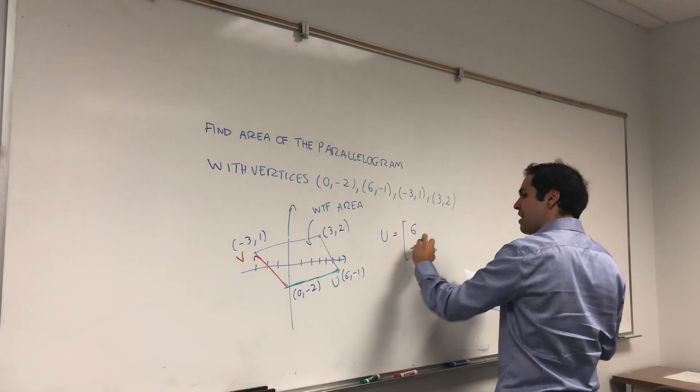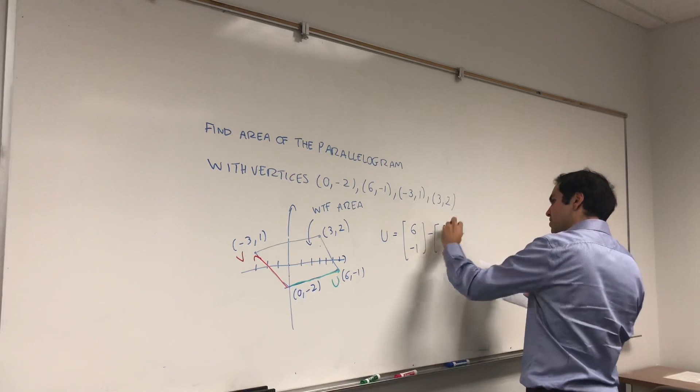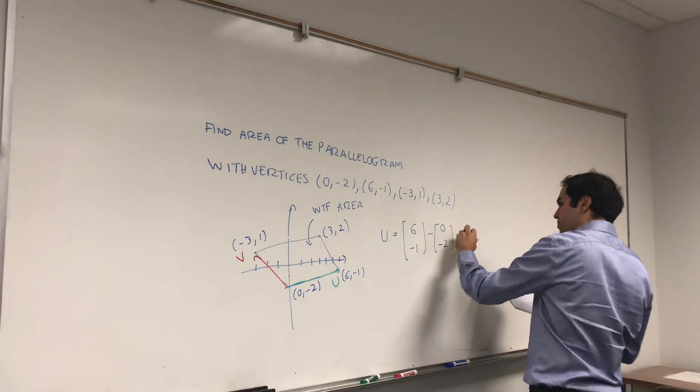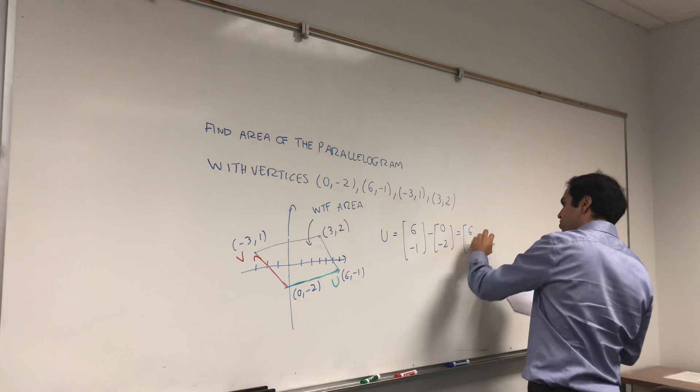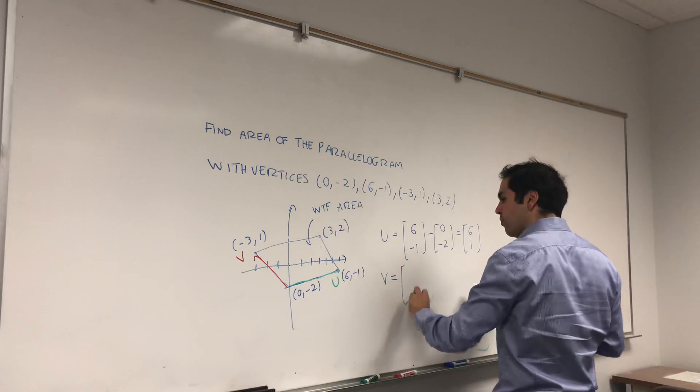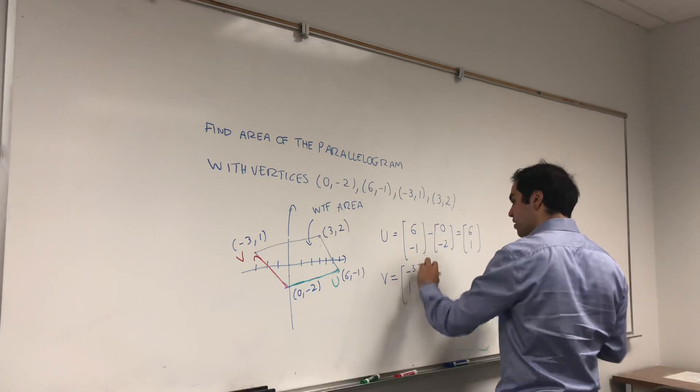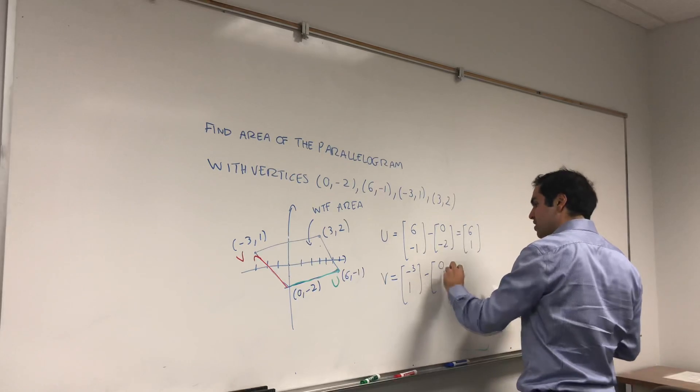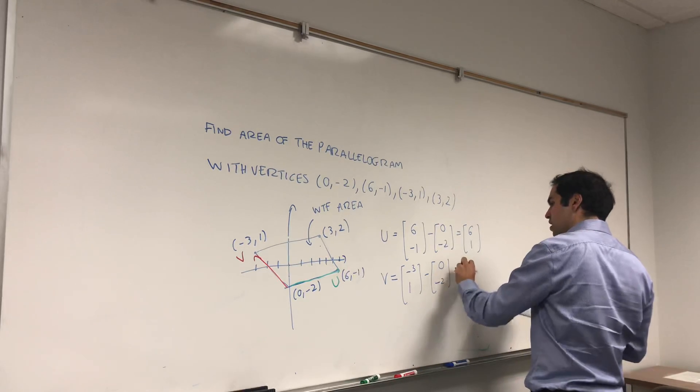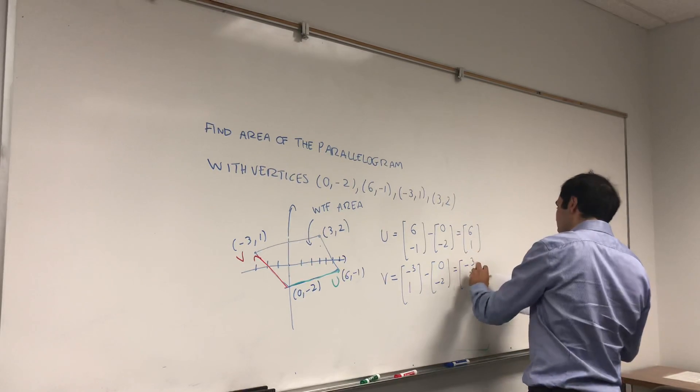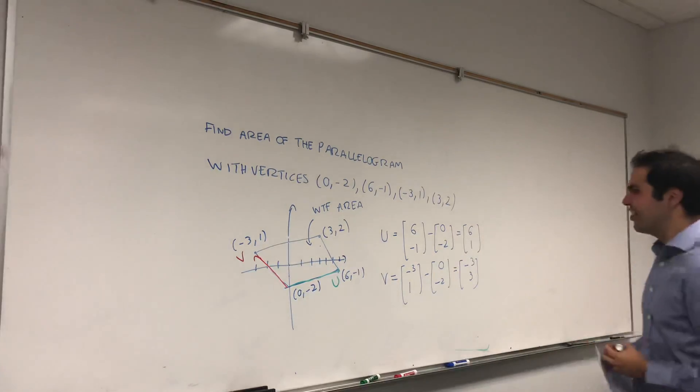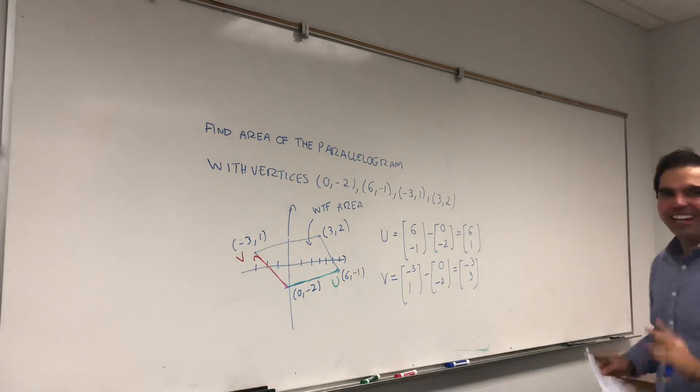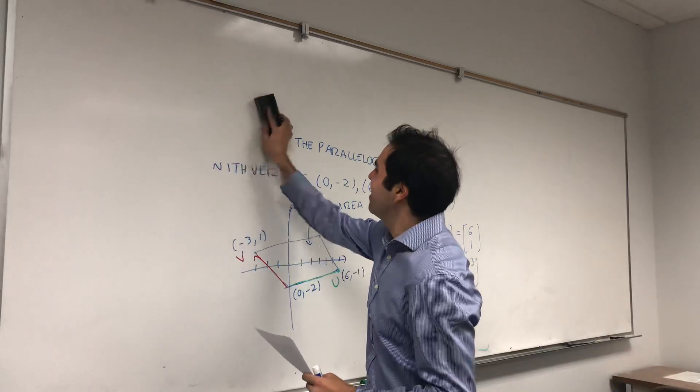So U is six minus one minus zero minus two, and that's six one. And V is, well, minus three one minus zero minus two, and that's minus three three. Okay, you have those two vectors, and here comes a beautiful thing.